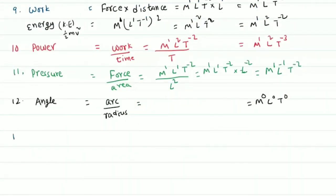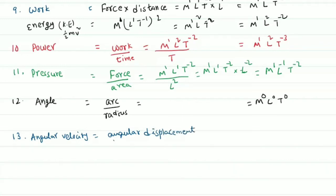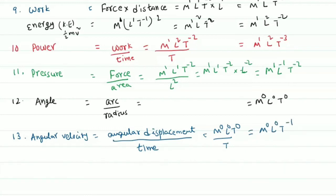The next physical quantity is angular velocity. Just as linear velocity applies to a body moving in a straight line, angular velocity applies to a rotating body. Angular velocity equals angular displacement divided by time, giving dimensions M power 0, L power 0, T power minus 1.